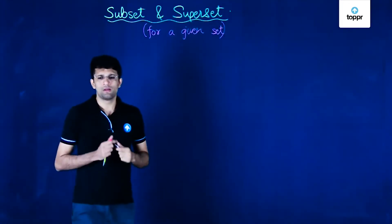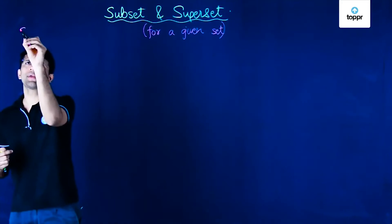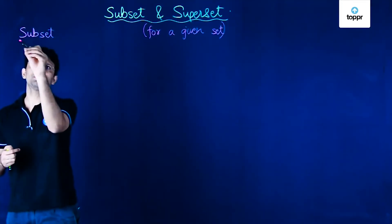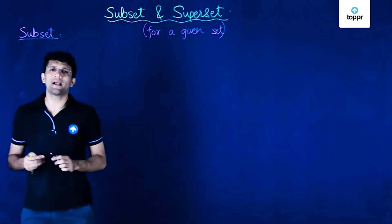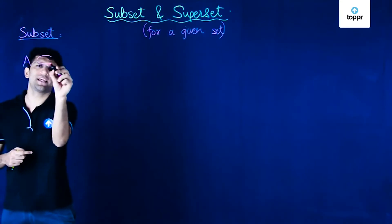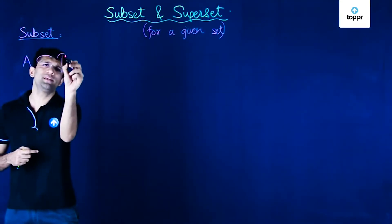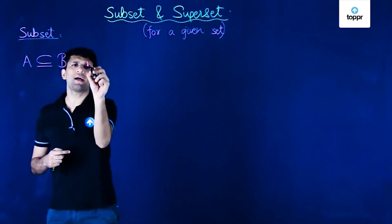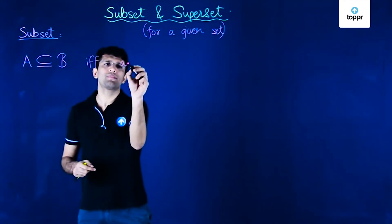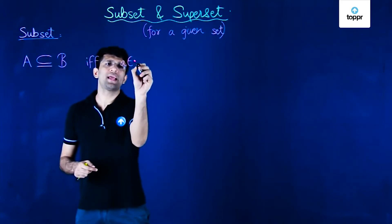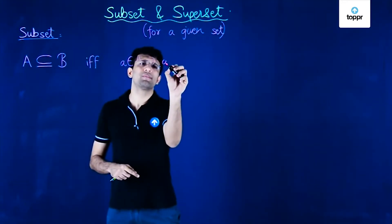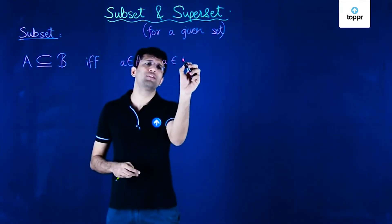Before looking at the definition of subset, let us first look at the mathematical way of representing a subset. We can say that a given set A is a subset of a given set B if and only if an element small a being an element of set A implies that the same element a is also an element of set B.